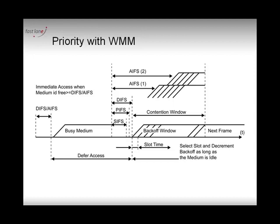As a side note, AIFS is always larger than DIFS. The reason is that the WMM prioritization system — with separate countdowns per queue — makes WMM packets so much more efficient than the normal DCF mechanism that if AIFS equaled DIFS, regular DCF stations would have virtually no chance of sending packets.